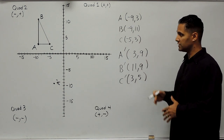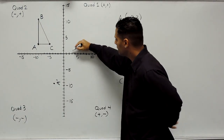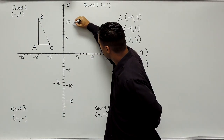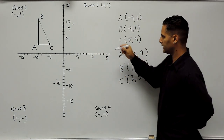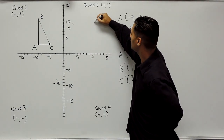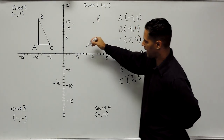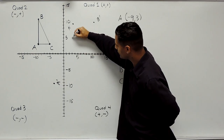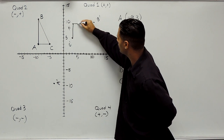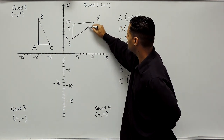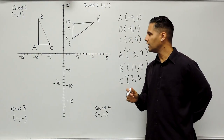Let's plot these coordinates to see what this triangle looks like. Starting with A, we find positive 3 and go up 9 — that's the new A. Then for B, we find positive 11 and go up 9 — that's the new location of B. And C is located at positive 3, positive 5. Then we connect the points.